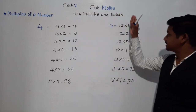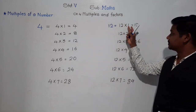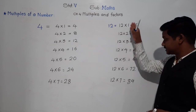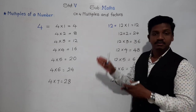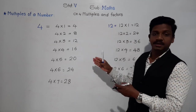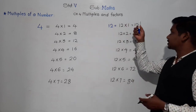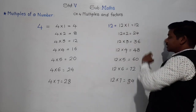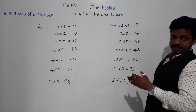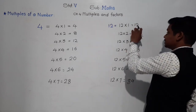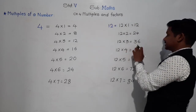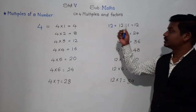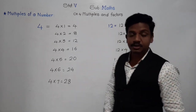So when 12 is multiplied with the natural numbers 1, 2, 3 and so on, the products obtained are called the multiples of 12. These numbers — 12, 24, 36, 48, 60, 72, 84 — are called multiples of 12.